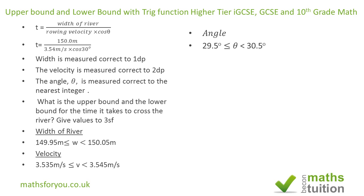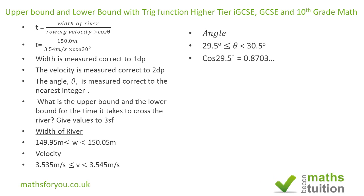Because we're dealing with a cosine function, we need to determine which cosine value is higher and which is lower. The cosine of 29.5 degrees is 0.8703, and the cosine of 30.5 degrees is 0.8616.